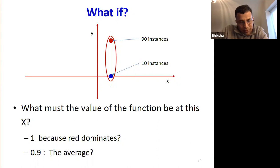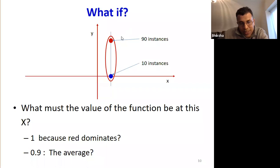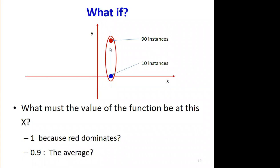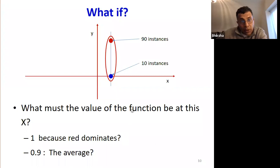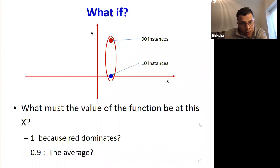Student response: It should be 1, because most of the samples are 1. What about 0.9? Which would make more sense? Student: 0.9 might make more sense because it would indicate our confidence of how often things will be classified as 1. Exactly — because from 0.9 you can always derive the 1; you know it's more than 0.5. Whereas when I go up to 1, that information is lost. So 0.9 is more informative.